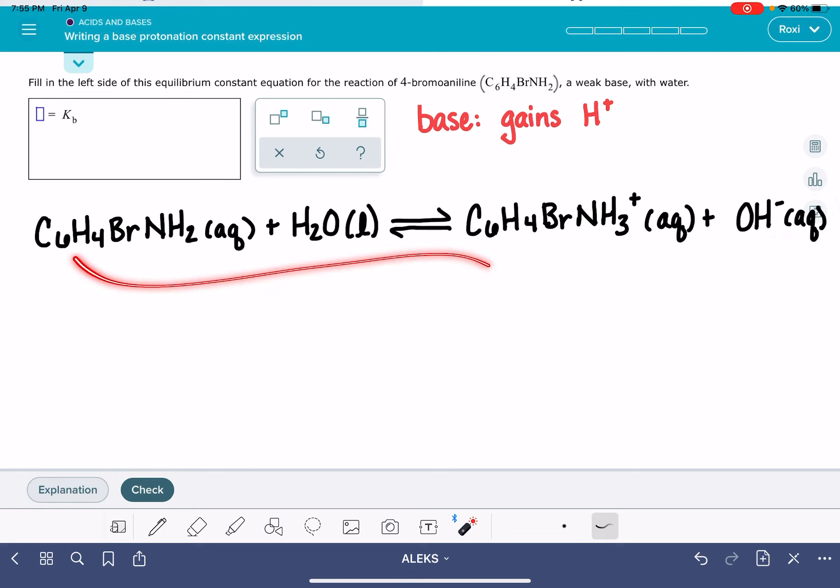Once we have this equation written, we are ready to write the equilibrium expression Kb. Equilibrium expressions, if you recall, we have our products over the reactants raised to their stoichiometric coefficients, leaving out pure liquids, and also solids. But we don't have any solids here.